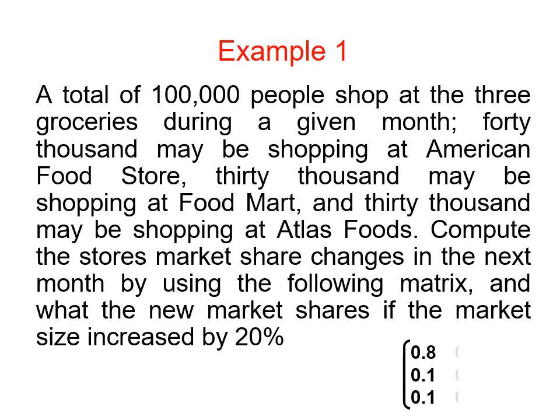The first example: a total of 100,000 people shop at three grocery stores during a given month. 40,000 may be shopping at American Food Store, 30,000 may be shopping at Food Mart, and 30,000 may be shopping at Atlas Food. Compute the stores' market share changes in the next month by using the following transition matrix.